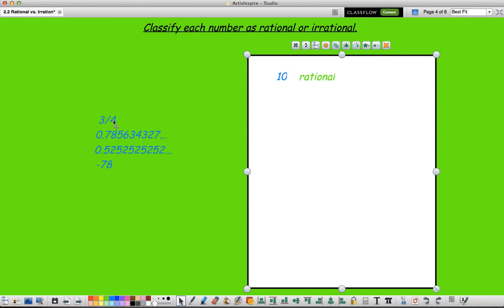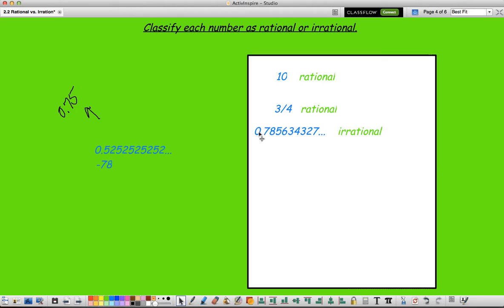Here I have 0.785634327 and I have no repeating sign. But I see that it goes on forever. Since there's no repeating symbol, so since there's nothing over the 7 to say that this whole thing repeats, we know that it goes on forever with no pattern and no repeating, so this is an irrational number.